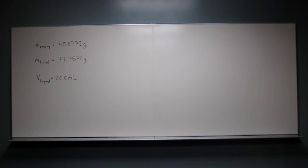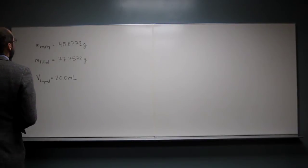After adding 20.0 mils of a liquid, the cylinder and its contents now weigh 77.7572 grams. What is the density of the liquid in grams per mil? Okay, so the first thing you're going to have to do.